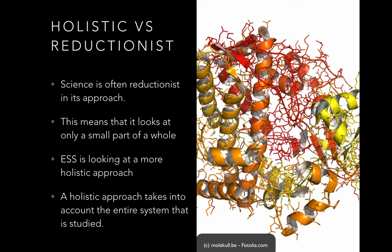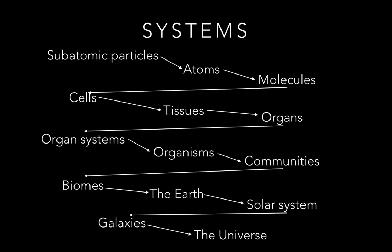The Environmental Systems Society's course looks at a more holistic approach. A holistic approach looks at the entire system being studied rather than just individual components of that system. Systems can range in size from subatomic particles through organisms all the way up to the universe.